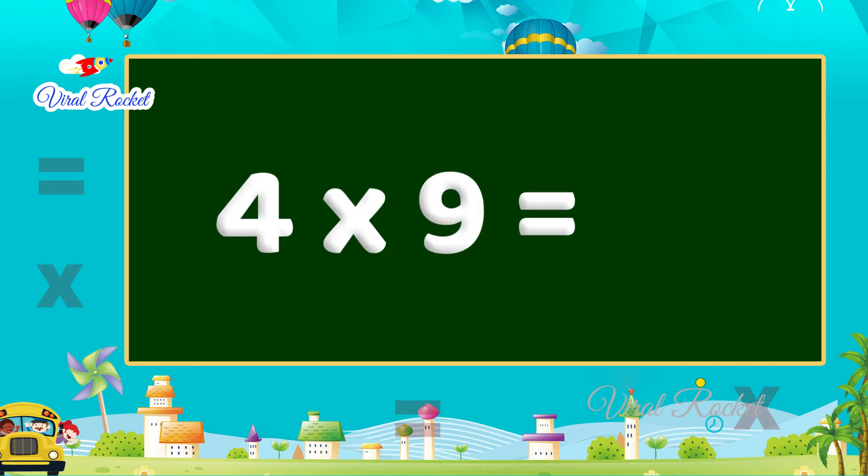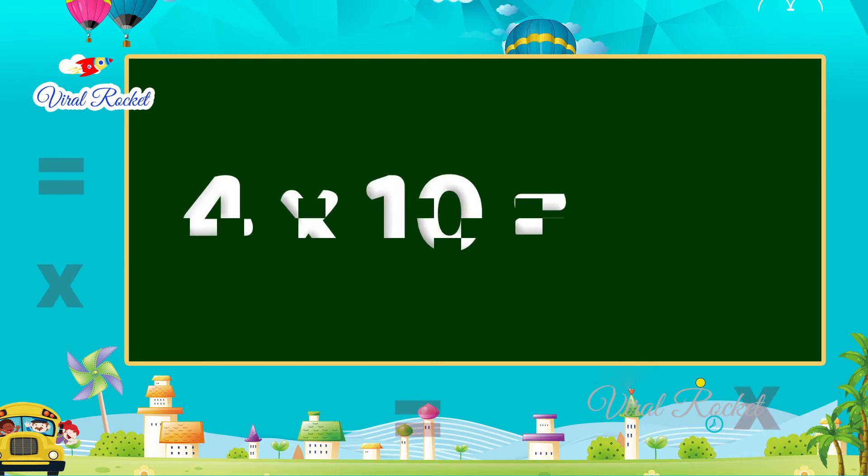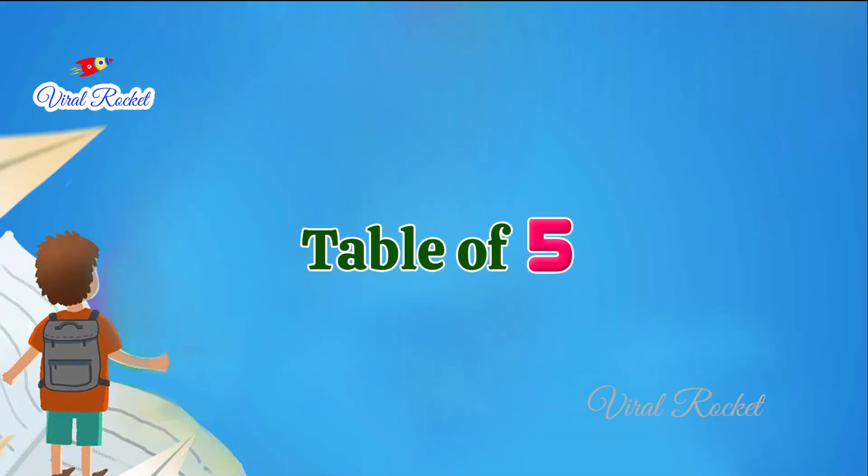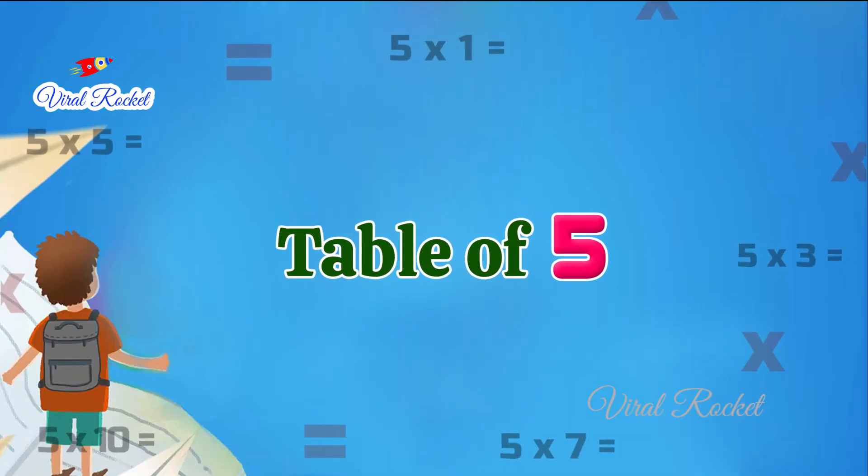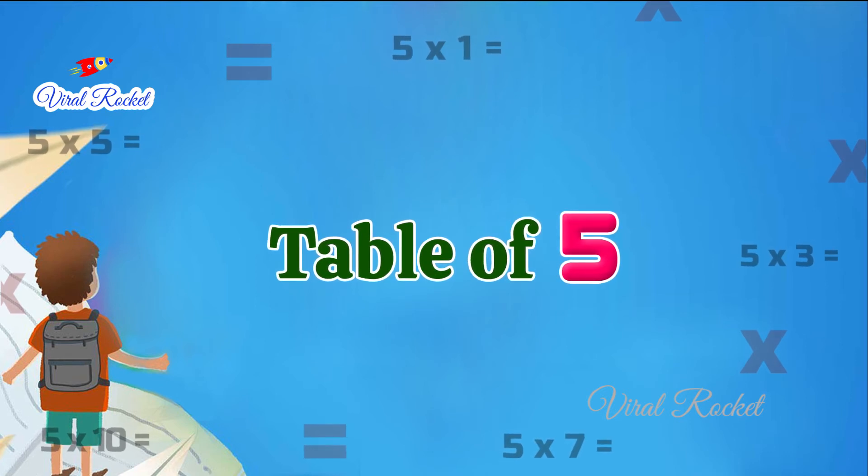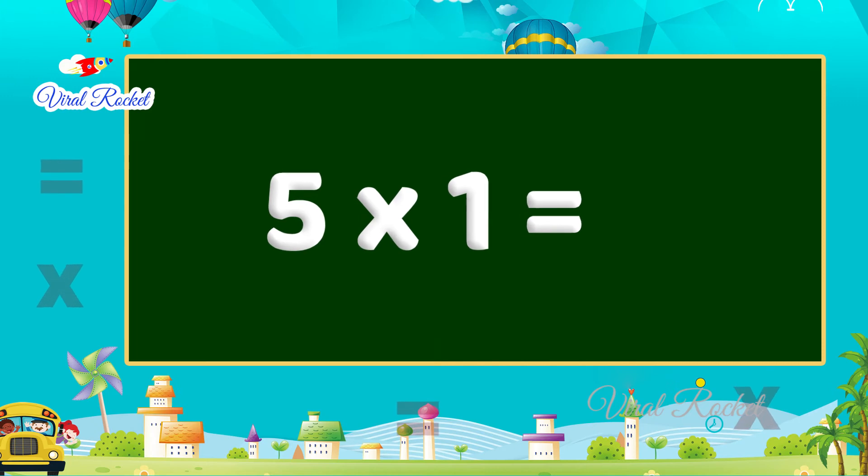Four nines are thirty-six, four tens are forty. We will learn table of five. Five ones are five.